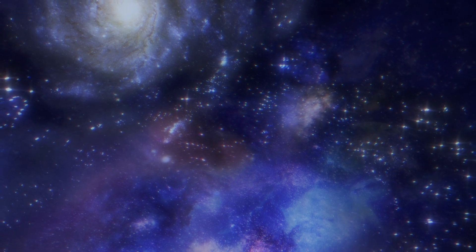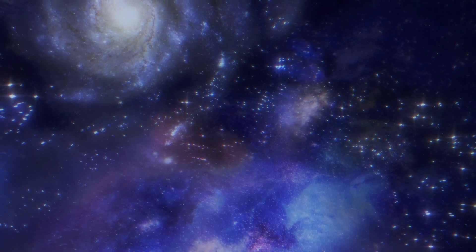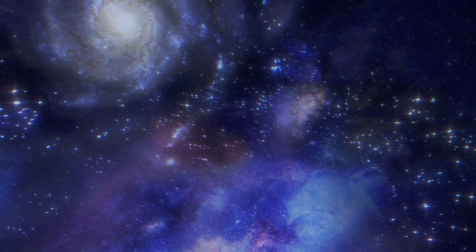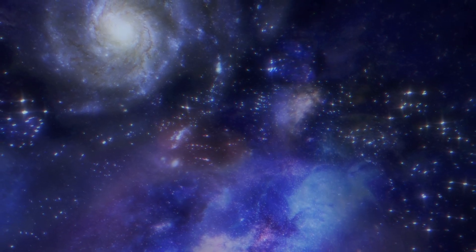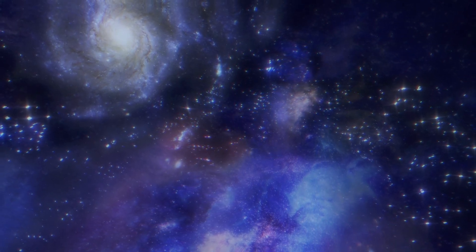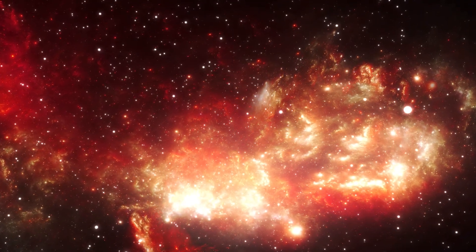This vast expanse contains only about 60 galaxies, all arranged in a tube-shaped region at the center of the void. Typically, we would expect to find around 2,000 galaxies in an area of this size.